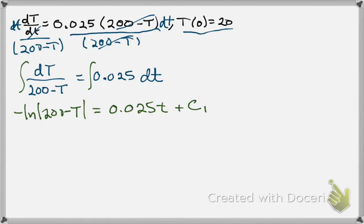First thing I'm going to do here is I'm going to move my negative sign. So I'm going to multiply both sides by a negative 1. Now what I'm going to do with that is on the left-hand side, I now have natural log of the absolute value of 200 minus T. Over here, I'm going to have negative 0.025T, and I've got a minus C1,